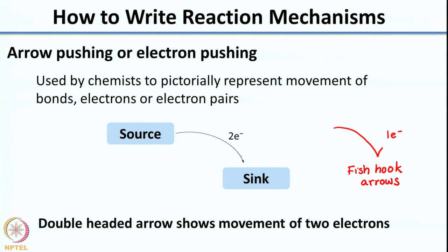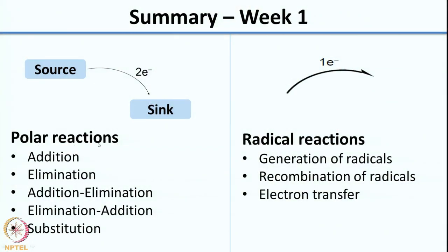We looked at multiple examples of arrow pushing. To summarize week 1, we looked at polar reactions and the basic mechanism types of addition, elimination, and substitution. We also classified various types of sources and sinks, to give you an idea of the different species you would encounter when writing a reaction. All of this was tested in your assignments.